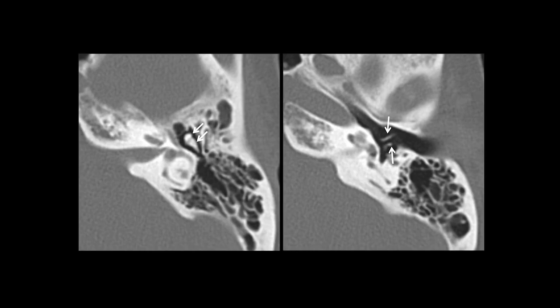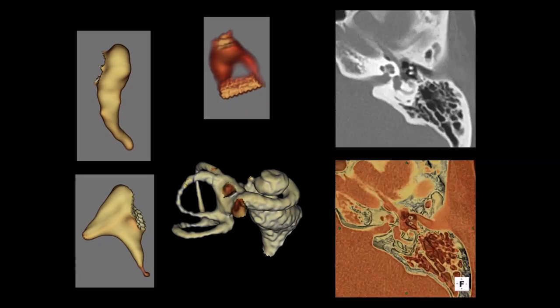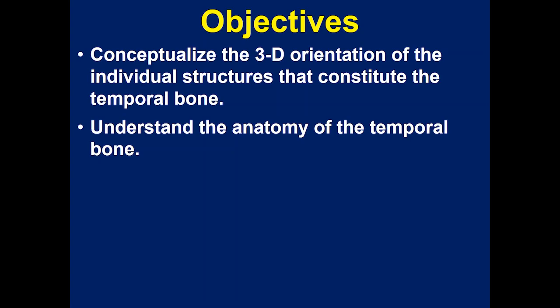However, advances in software technology, especially the utilization of 3D volume rendered surface shaded displays, has helped us assess the morphological appearance of these individual structures. Applying this, we can assess the temporal bone more effectively and easily on our conventional CT images. What I would like to do today is to help you conceptualize the three-dimensional orientation of these individual structures that constitute the temporal bone, their relationship to each other in space, and utilize that to help us understand the anatomy of the temporal bone when we look at our conventional CT images.